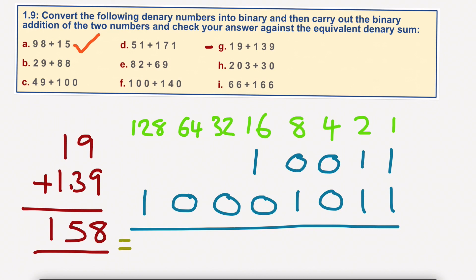We have 1 plus 1, obviously, is 2. We carry it. 1 plus 1 plus 1 is 3. That's 1 down, 1 to carry. 1 plus 0 is 1. 1 plus 0 is 1. 0, 0, 1.